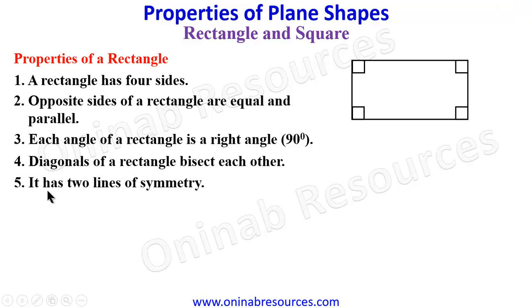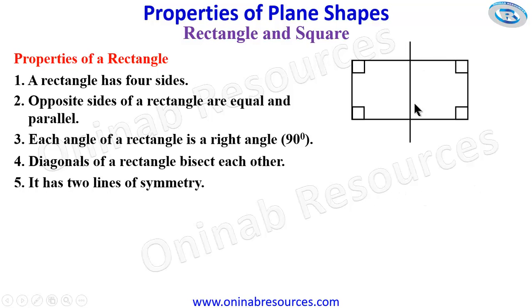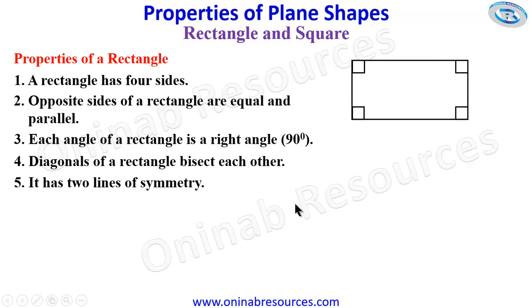The fifth property is it has two lines of symmetry. A line of symmetry is a line that divides a shape into two equal halves. The first line is vertical, dividing into two halves, and the second one is horizontal, also dividing into two halves. So these are the properties of a rectangle.